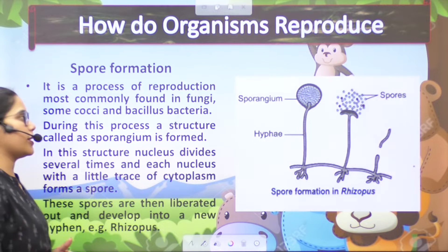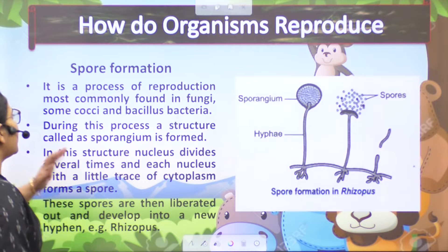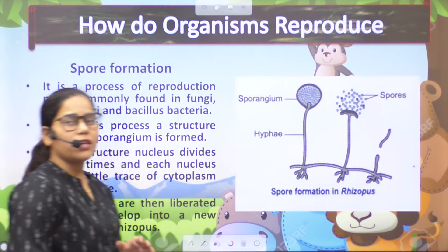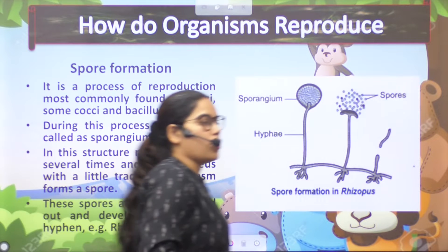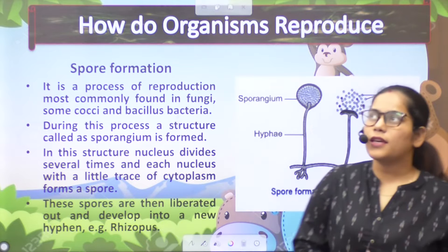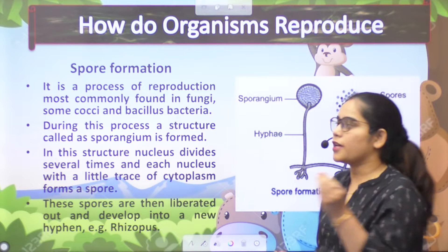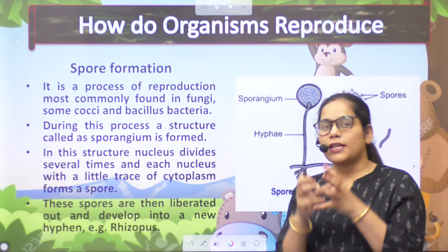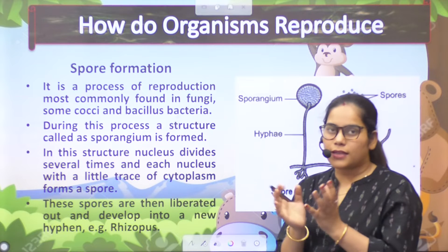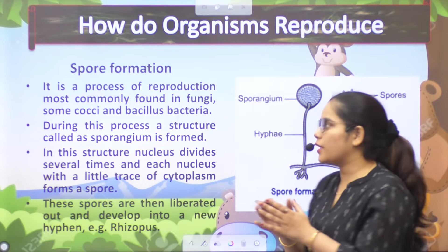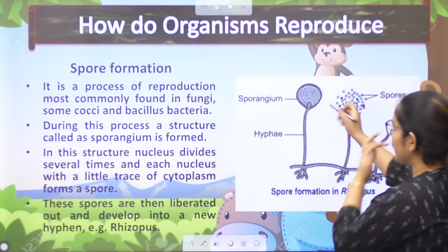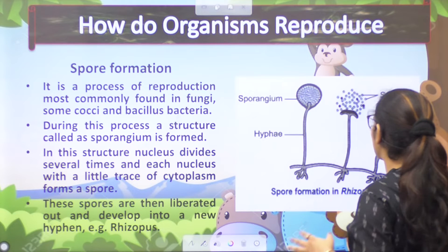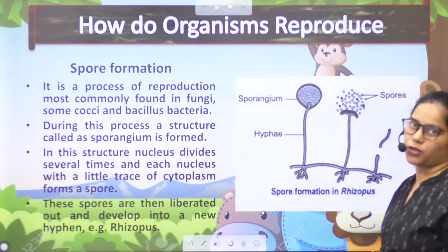How does spore formation happen? This is a process of reproduction which is most commonly found in fungi. This is the whole hyphae. This is the whole rhizopus. This is the spore formation process.